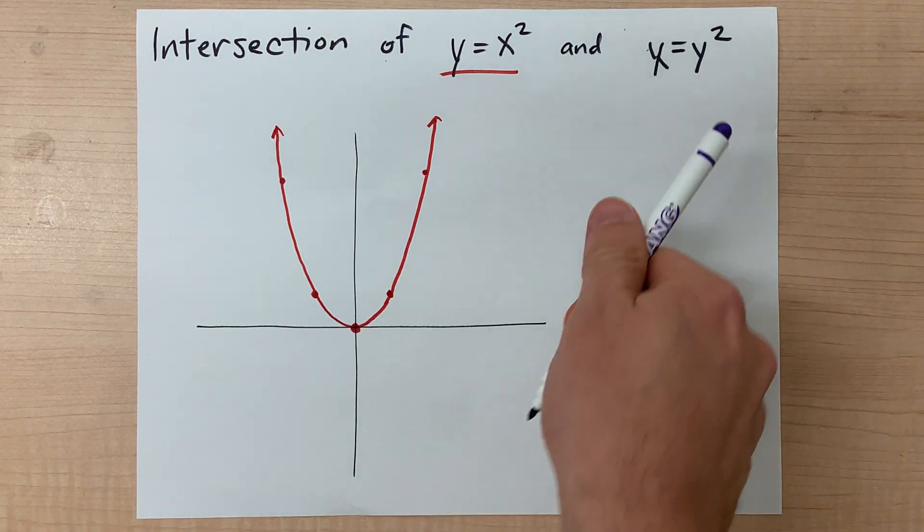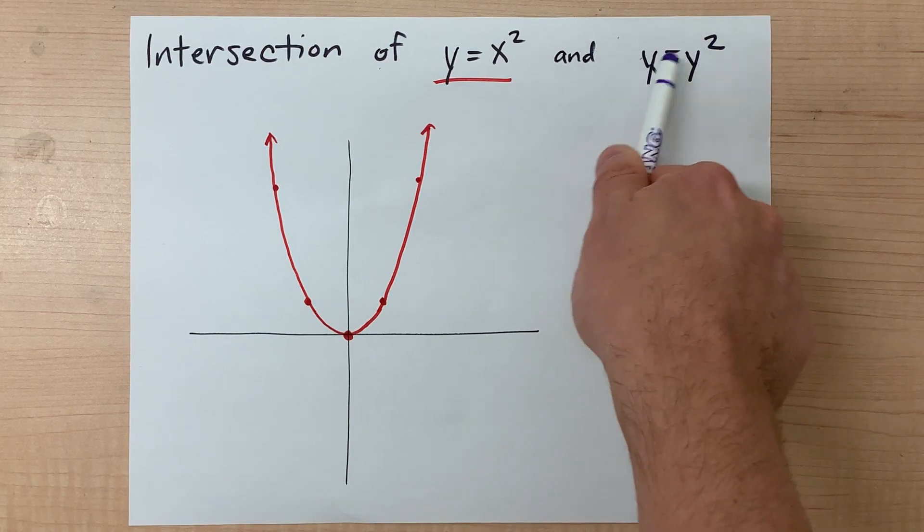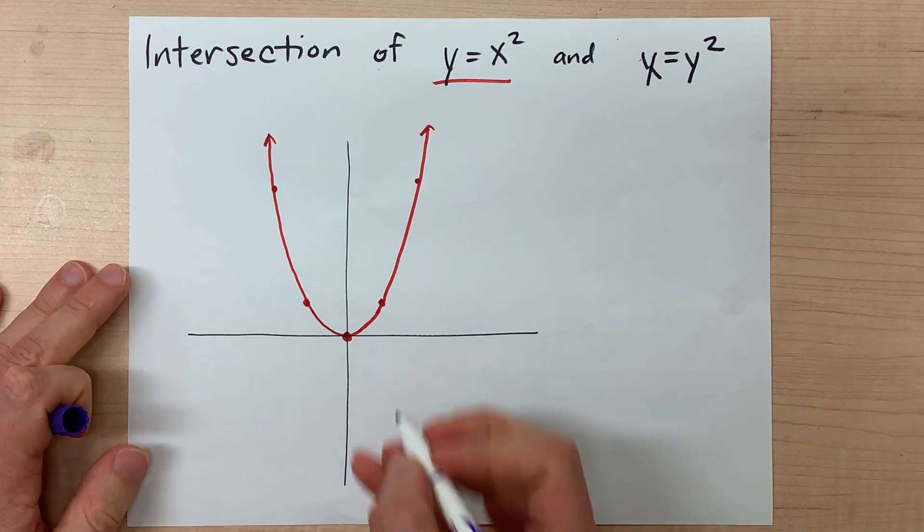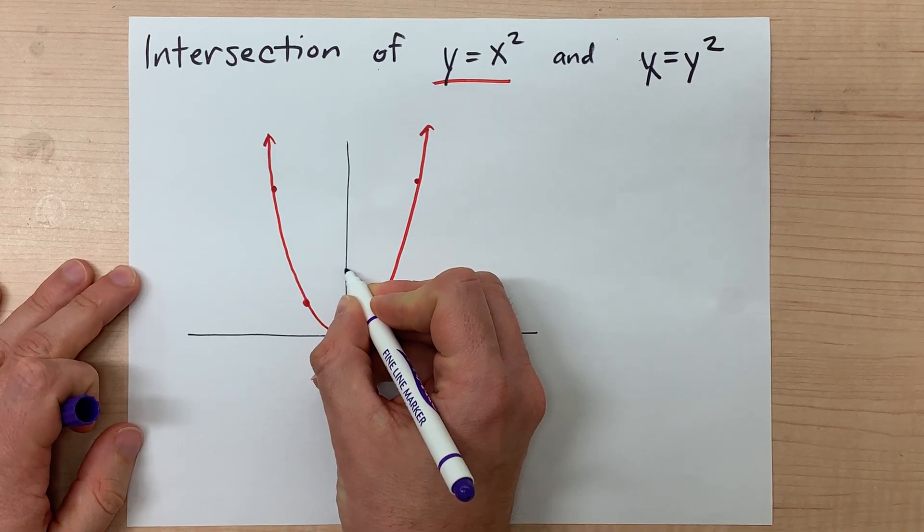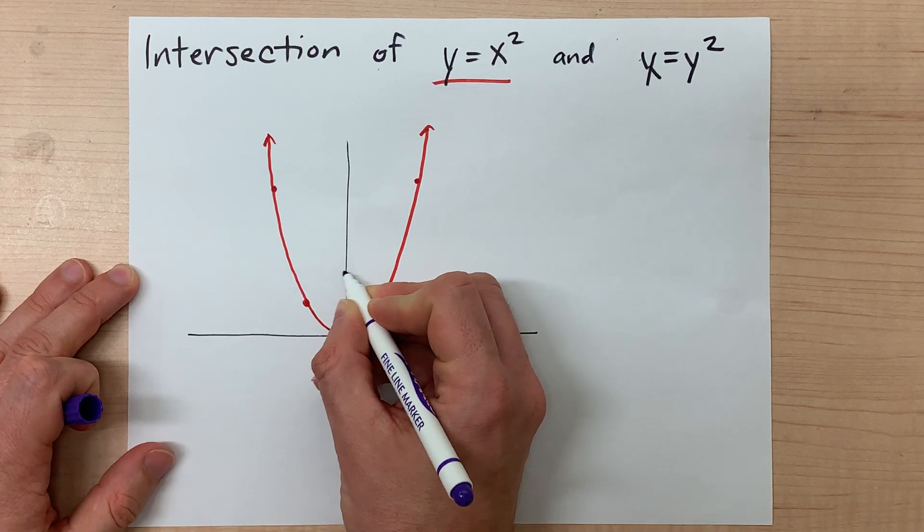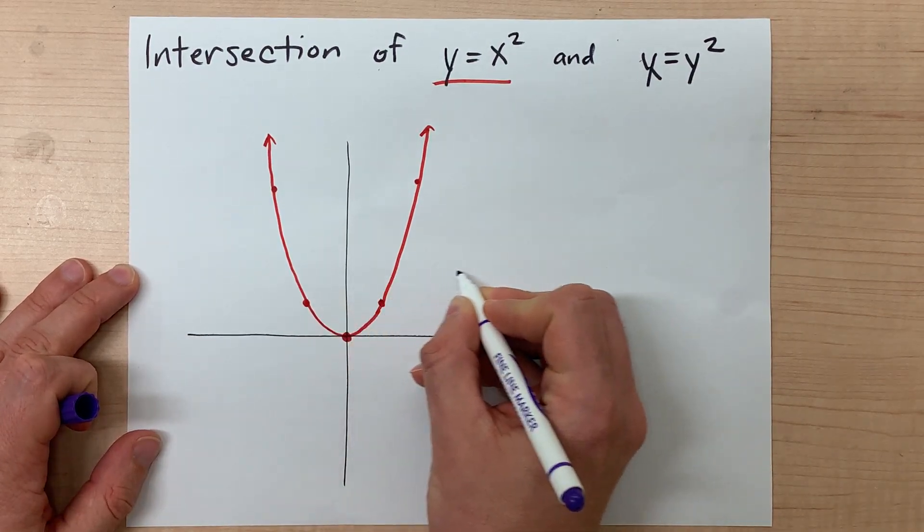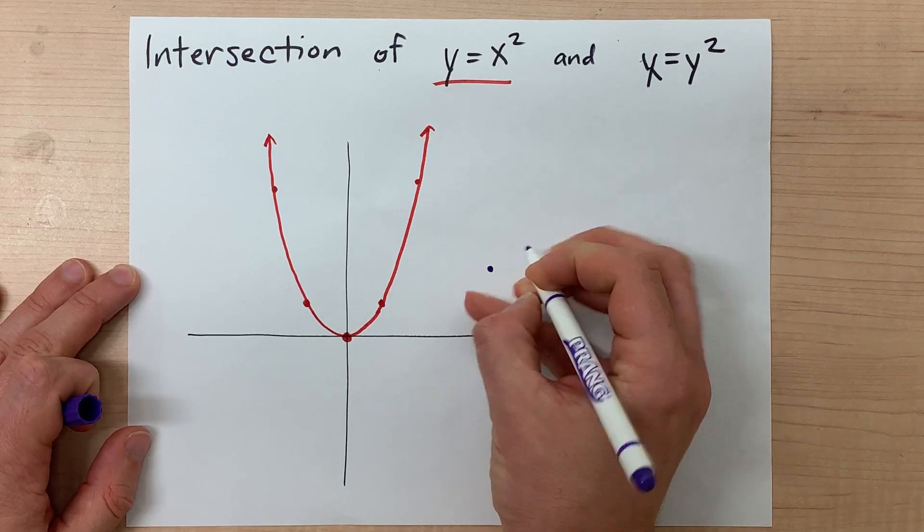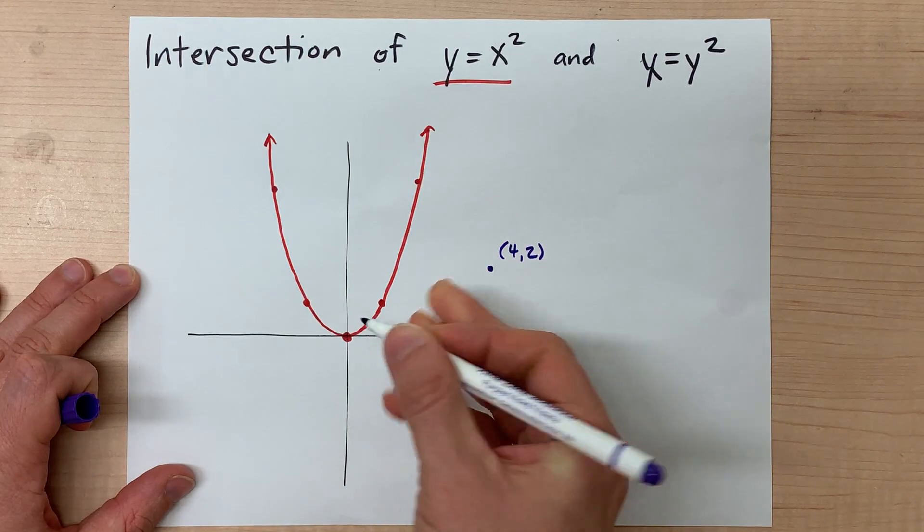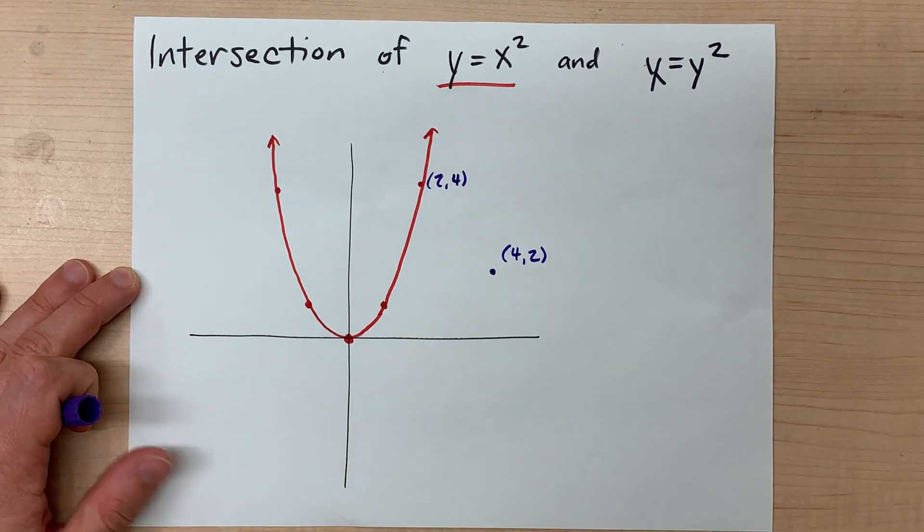But I'm also going to point out that you can take values of y, square them, and that gives you the corresponding x. So as an example, if I started at positive 2 here, that's a y of 2, 2 squared is 4, which means the corresponding x coordinate is positive 4. This here is (4,2), which again is the inverse of the point on the original parabola (2,4).